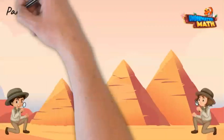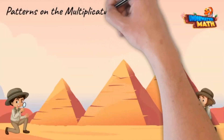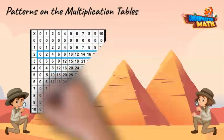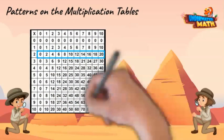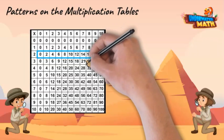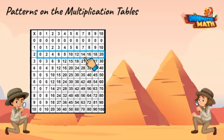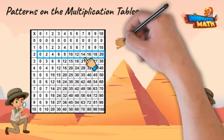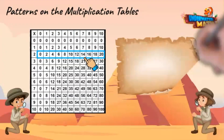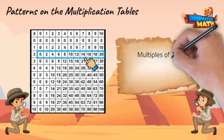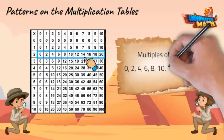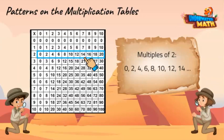Let's now explore patterns on a multiplication table. Look at the row next to the two highlighted in blue. What do you notice about these numbers? They are skip counting by twos. I think they are called multiples of two.